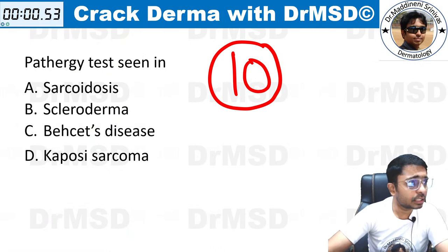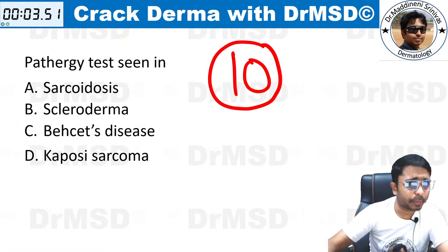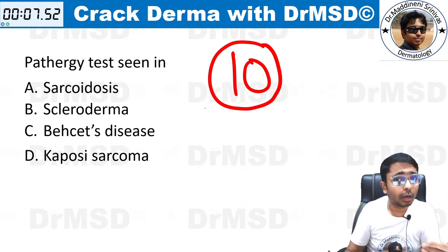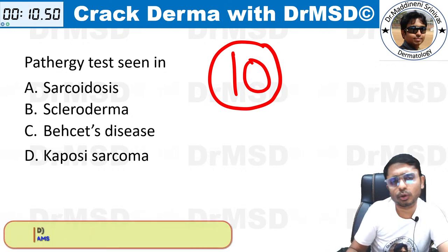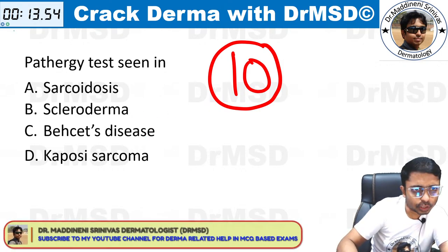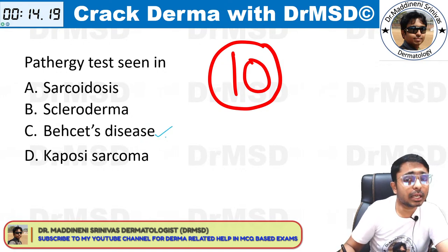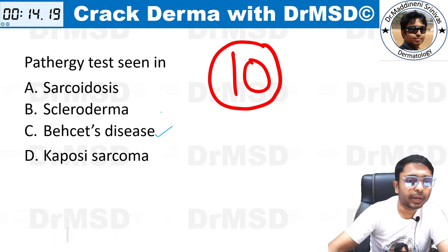Question number ten — pathergy test. Ten seconds is more than sufficient; this is a memory-based question. Even without the options, you should be in a position to remember the answer based upon previous year questions. If you have marked it as Behcet's disease, your answer is absolutely correct — option C, that is Behcet's disease.